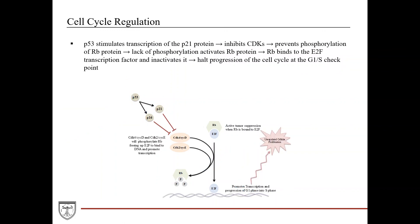In a cancer where P53 is mutated and doesn't carry out its function, P21 and P16 aren't produced, so there's no blocking of the CDK-cyclin complexes. You then have uncontrolled, unregulated phosphorylation of retinoblastoma protein—E2F gets freed up continuously, promotes transcription and G1-to-S progression, resulting in unregulated cellular proliferation. Any DNA damage or mutations get passed on to subsequent cell divisions, leading to cancer.